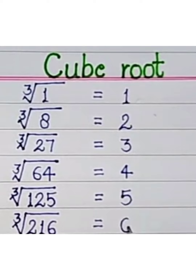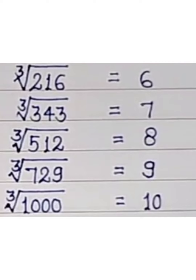6 cube root is 216, 7 cube root is 343, 8 cube root is 512, 9 cube root is 729, and 10 cube root is 1000.